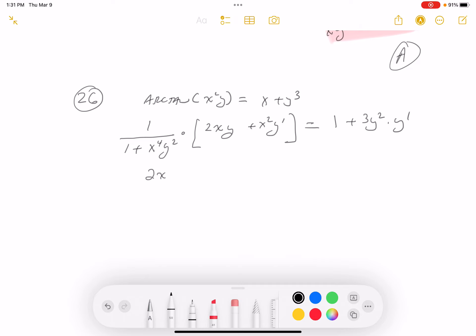You're going to get 2xy plus x squared y prime equals, well, 1 times that LCD is going to be 1 plus x to the 4 y squared. And then I got this 3y squared y prime times the LCD.